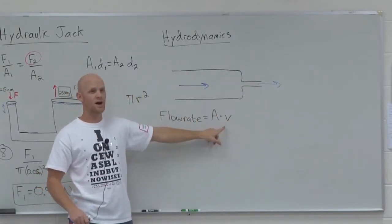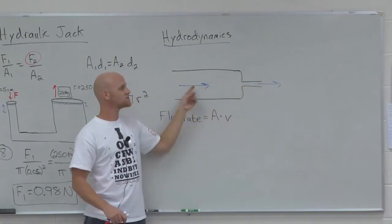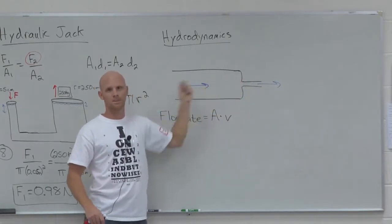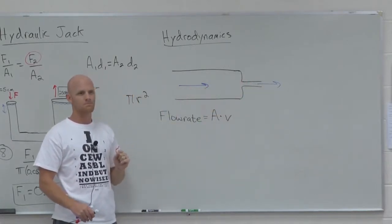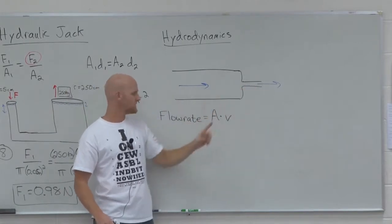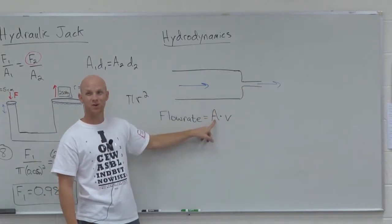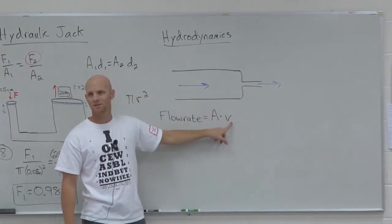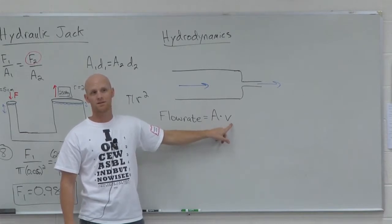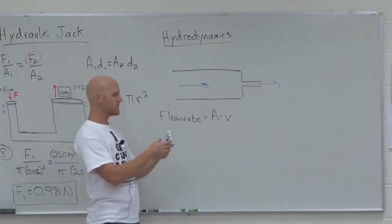But the velocities are definitely not. Which side has the smaller area? Where the nozzle is. And if it's got the smaller area, to have the same flow rate, what must be true about its velocity? Got to be way higher. And so that's the idea of flow rate being constant.